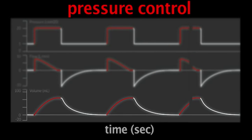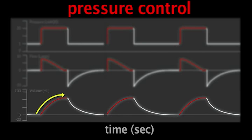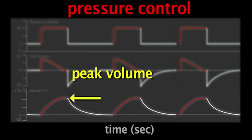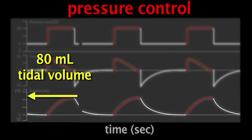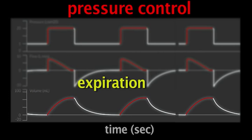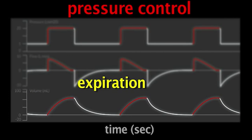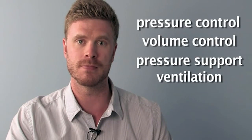Looking at the volume waveform, we start at zero mLs and increase gradually in a curved manner up to the peak volume delivered — about 80 mLs of tidal volume here. Then the ventilator cycles into expiration, the breath is exhaled, and the volume waveform gradually returns to zero. I encourage you to study normal ventilator waveforms in pressure control, volume control, and pressure support ventilation. This will help you build a solid understanding of what is normal so that when an abnormality arises you'll be able to quickly identify and treat it.